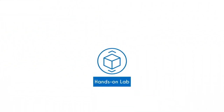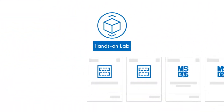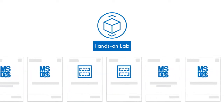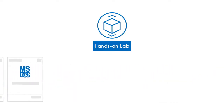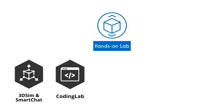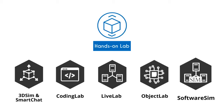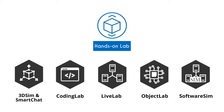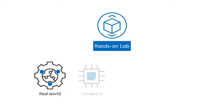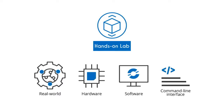UCertify comes complete with 82 hands-on labs to give students a real exam experience in an online environment. The labs consist of 3DSim and SmartChat, CodingLab, LiveLab, ObjectLab, and SoftwareSim, which simulate real-world hardware, software, and command line interface environments that allow students to perform activities in real or simulated environments.